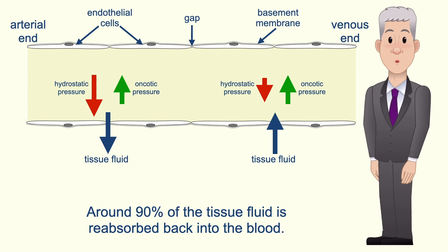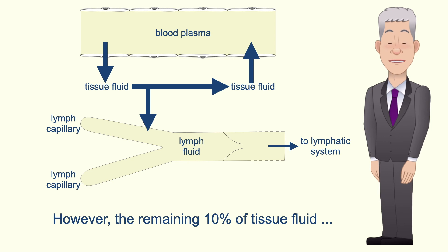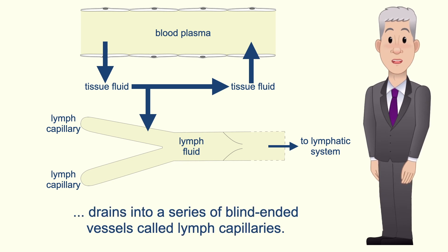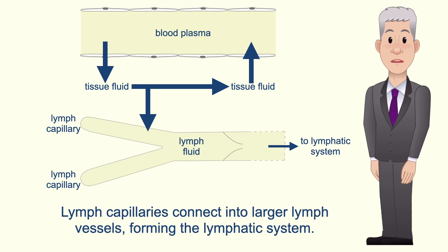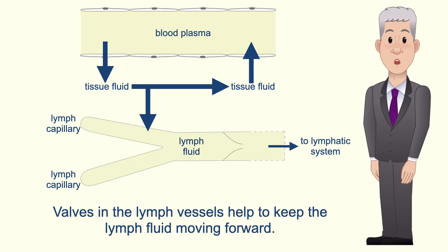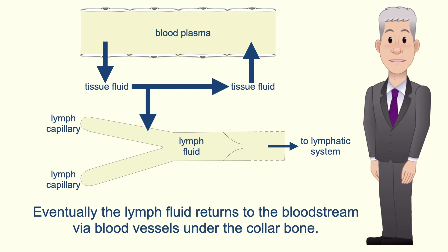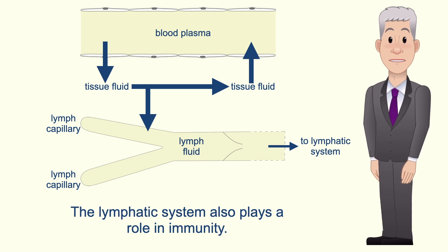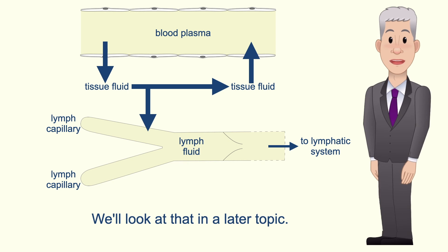Around 90 percent of the tissue fluid is reabsorbed back into the blood. However, the remaining 10 percent of tissue fluid drains into a series of blind-ended vessels called lymph capillaries. Lymph capillaries connect into larger lymph vessels forming the lymphatic system. Lymph fluid moves along when lymph vessels are squeezed by nearby skeletal muscles, and valves in the lymph vessels help to keep the lymph fluid moving forward. Eventually the lymph fluid returns to the bloodstream via blood vessels under the collarbone. The lymphatic system also plays a role in immunity, which is covered in a later topic.